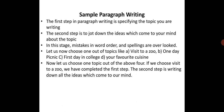Let us take an example of paragraph writing. As we saw in the previous session, the first step in paragraph writing is specifying the topic you are writing. The first step is to write down ideas which come to your mind about the topic. Once you choose the topic, start writing whatever comes to your mind in a rough sheet. In this stage, mistakes in word order and spellings are overlooked. Don't worry about the grammar and spelling of the points you are writing.